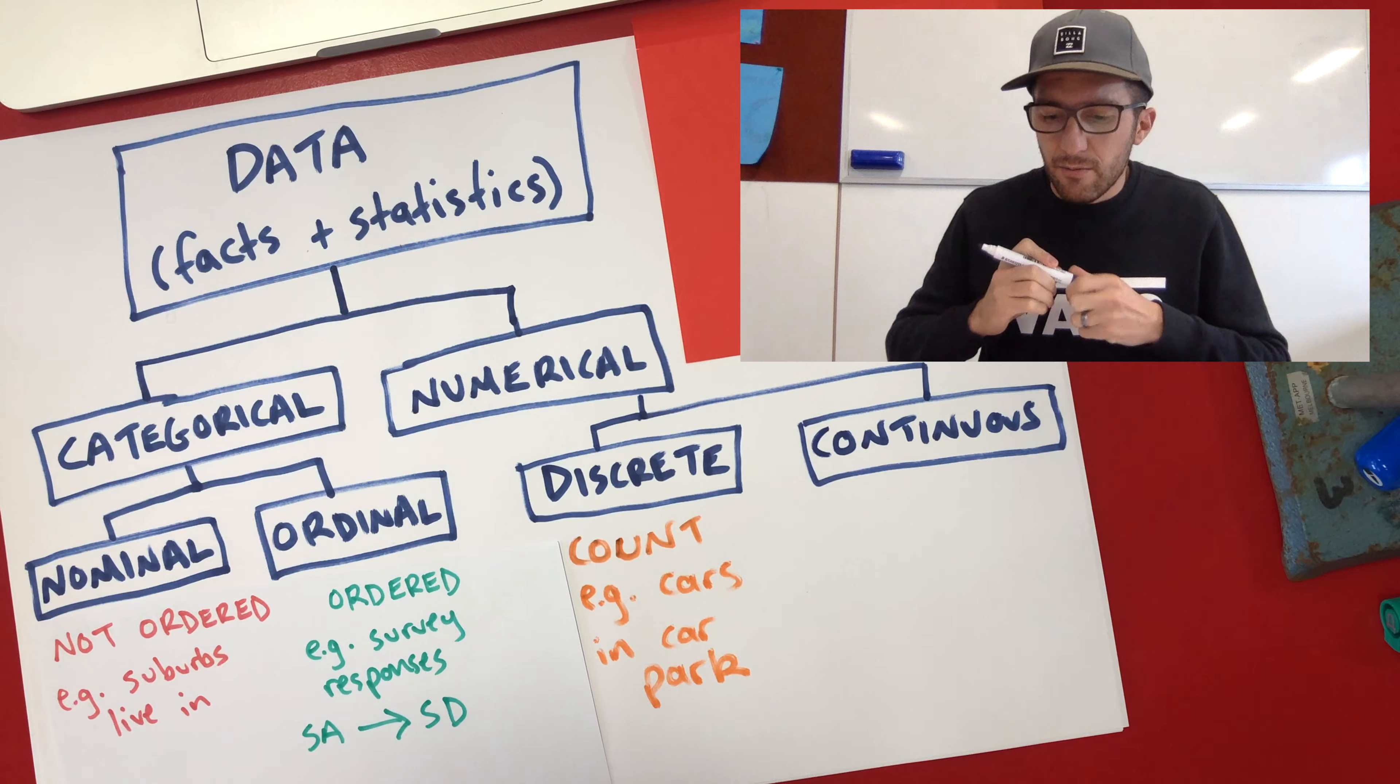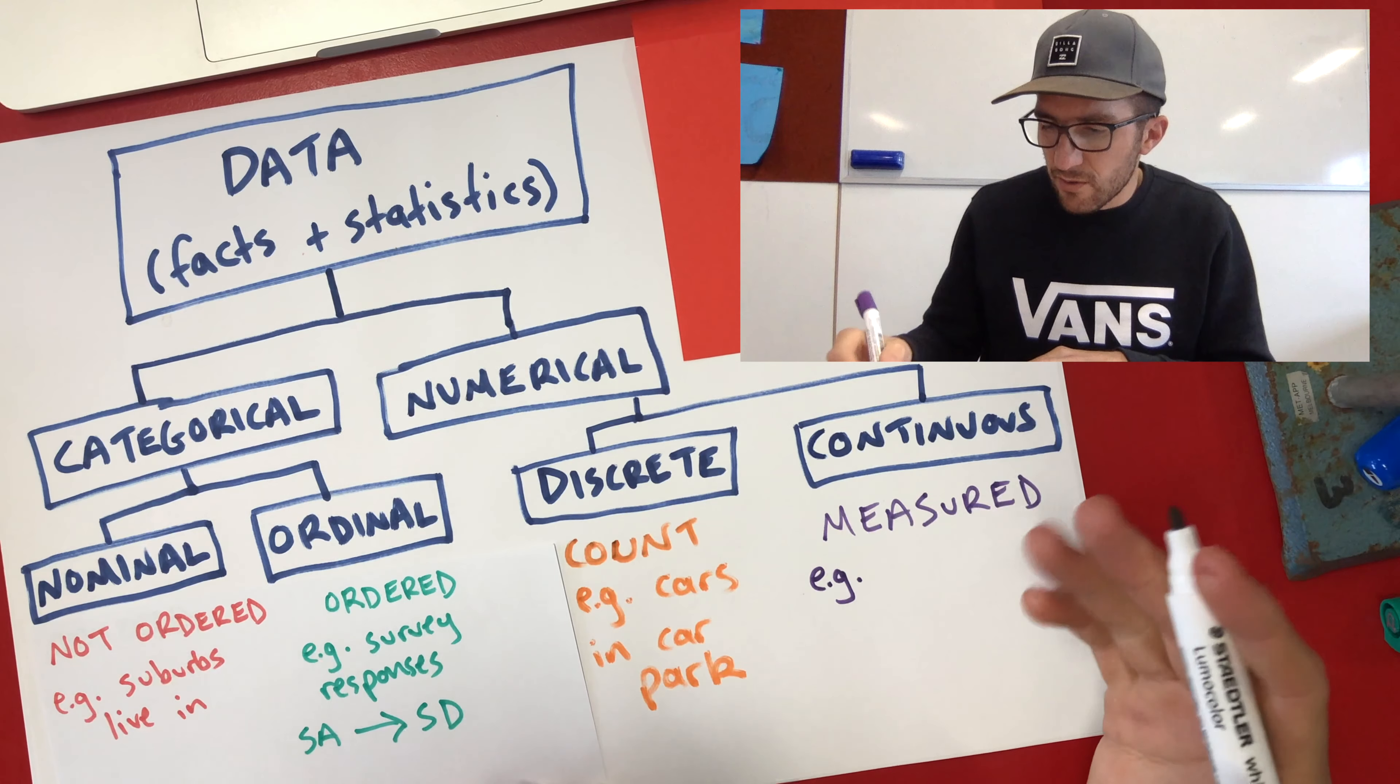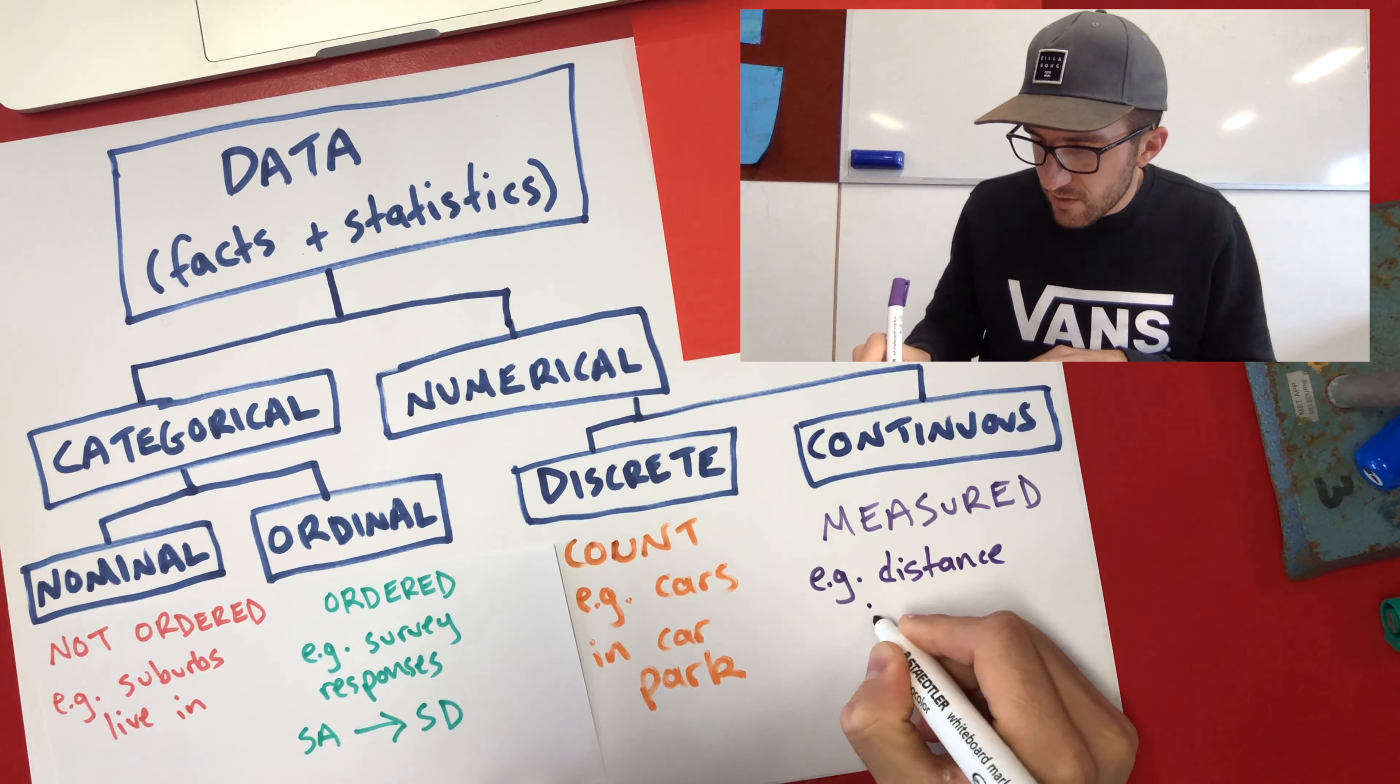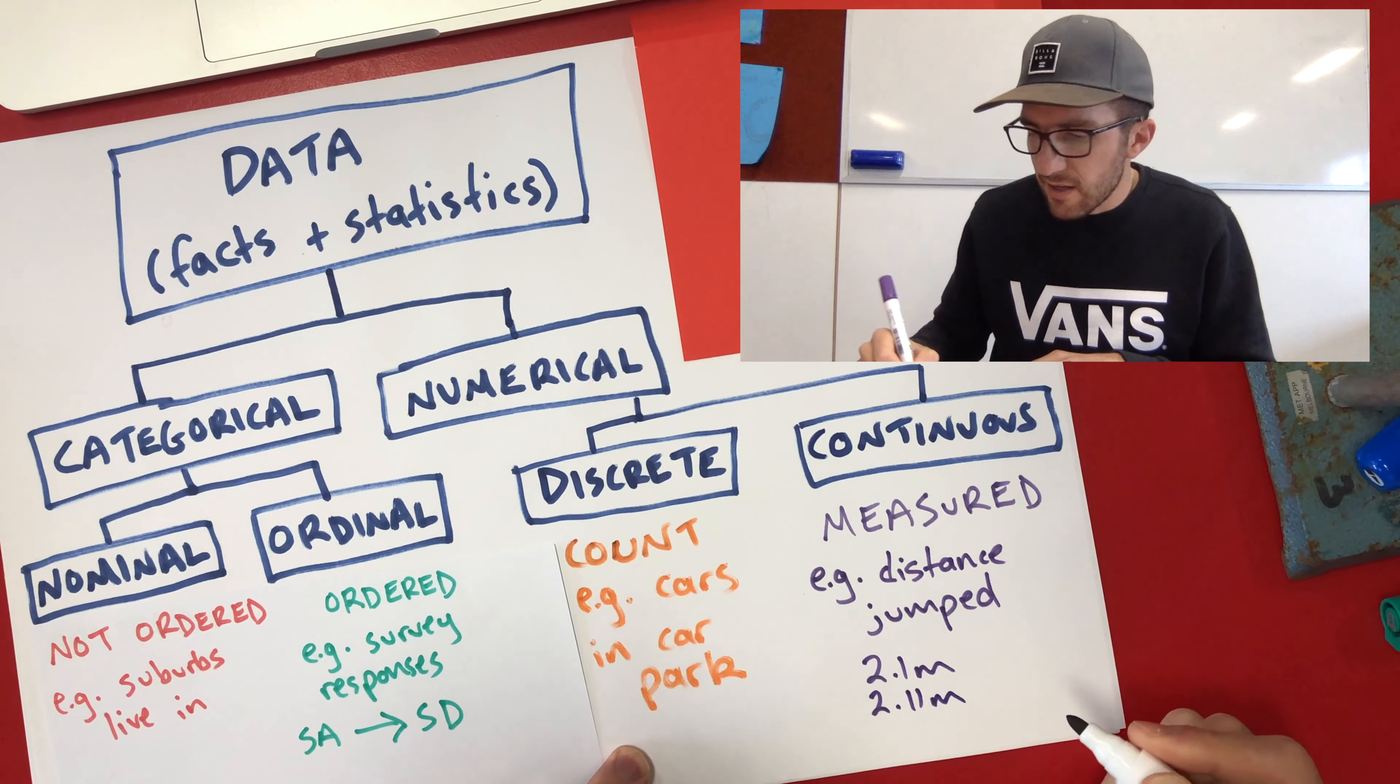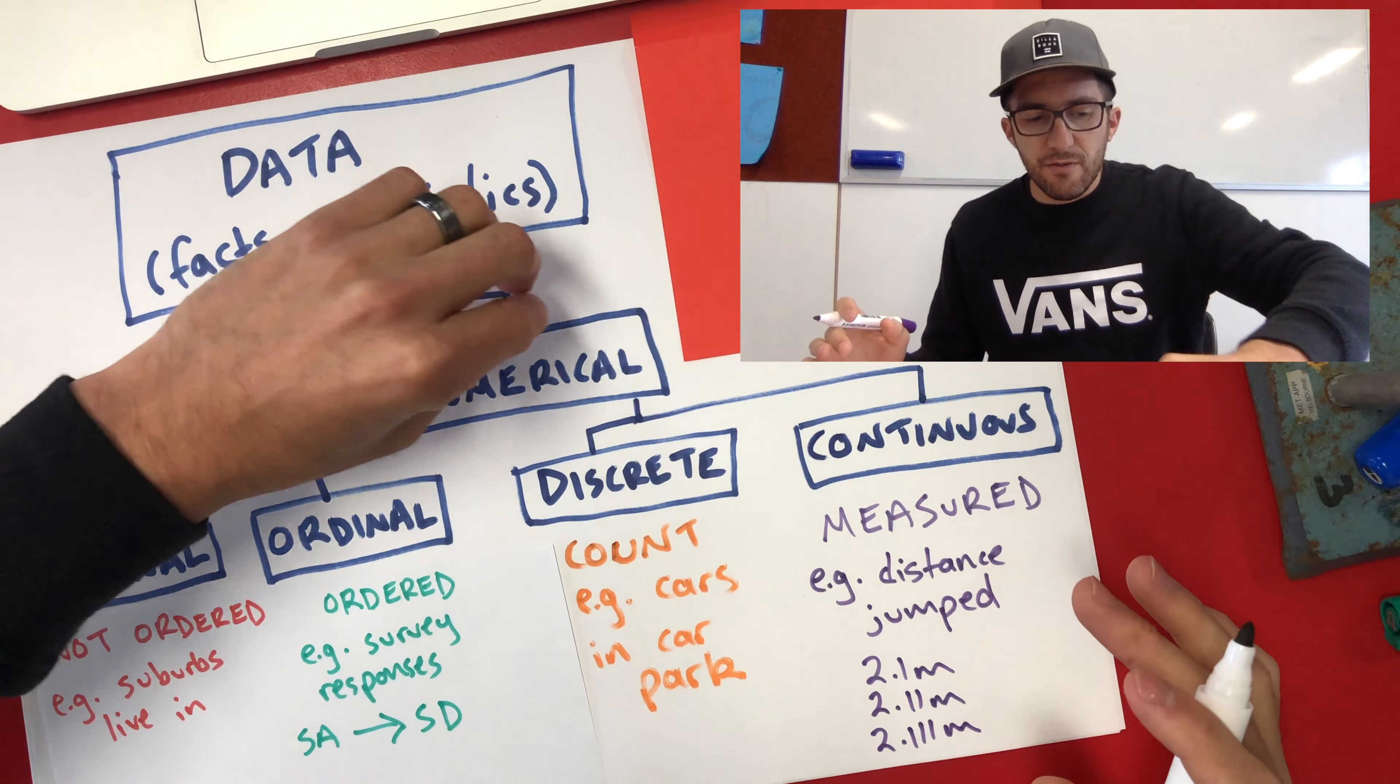Continuous data on the other hand, this is data that we measure. So continuous data is measured. And so continuous data can be any number. It can be a decimal number as well. And so anything to do with measurement, time, length, weight, volume, all that sort of stuff is continuous data. And so we might be doing a survey to see how far you can jump. So we'll say distance jumped. And you can imagine for that, you could get a whole range of different answers. So you might get like 2.1 meters, but then you could get 2.11 meters, and then 2.111 meters. And it sort of goes on and on and on, doesn't it, depending on how accurate you are with your measurements.